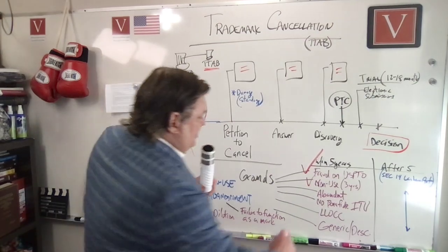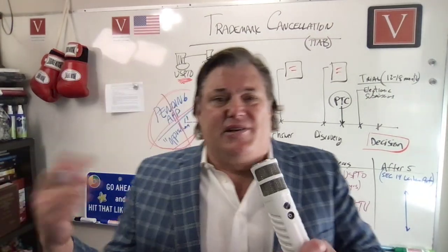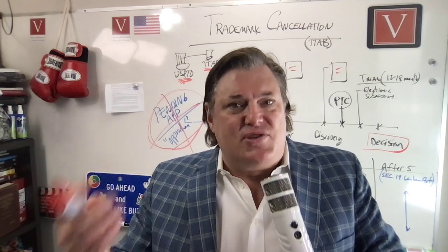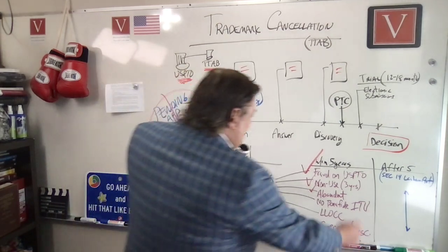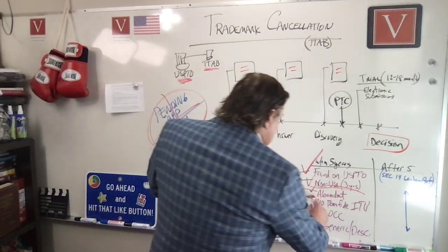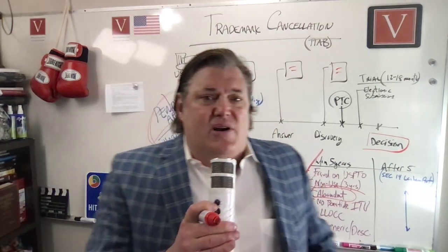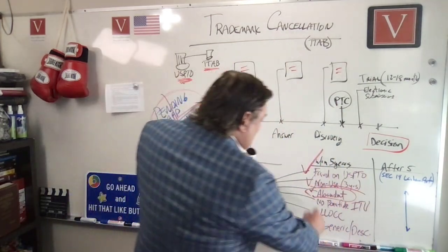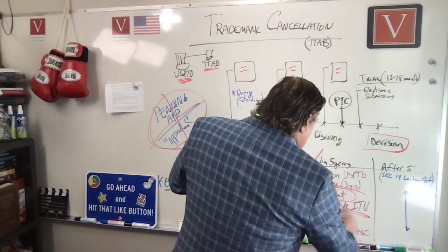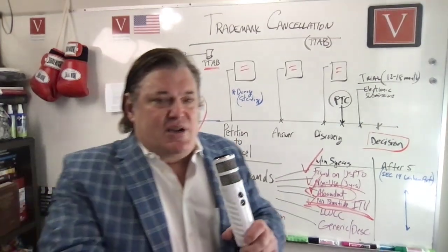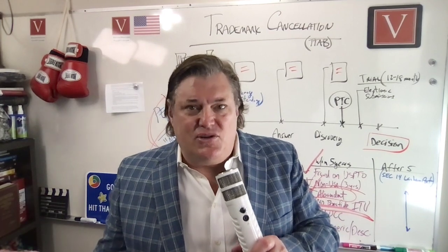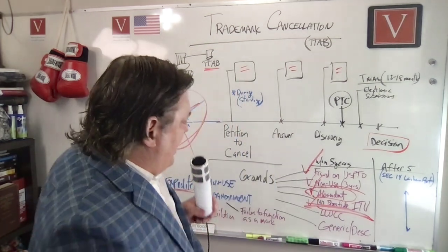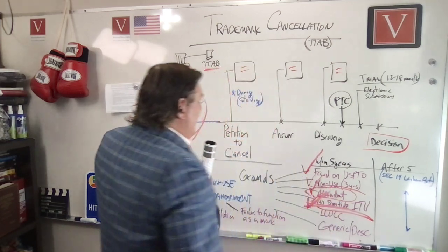Nonuse for three years goes along with abandonment. If somebody is claiming a trademark and just not using it — trademarks are based on use, using the mark in commerce — and you can show they haven't used it for three years, that's nonuse. Abandonment is where a party has a trademark but has intent to abandon and just abandons it — you've got to prove they intended to abandon it. No bona fide intent to use: sometimes somebody will file a 1B trademark application — intent to use — but if you can show they had no bona fide intent to use, you can seek to cancel on those grounds.